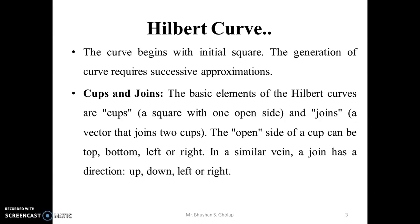The basic elements of Hilbert curves are curves, a square with one open side, or we say a U shape. The open side of a curve can be top, bottom, left or right. Also, joins is the basic element of Hilbert curve, a vector that joins two curves or two U shapes. A join has a direction: up, down, left or right.